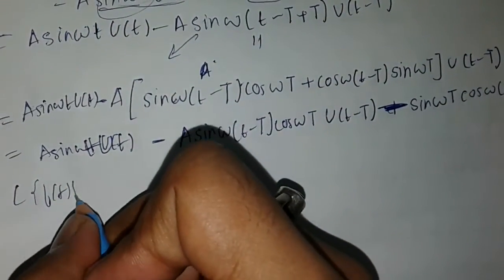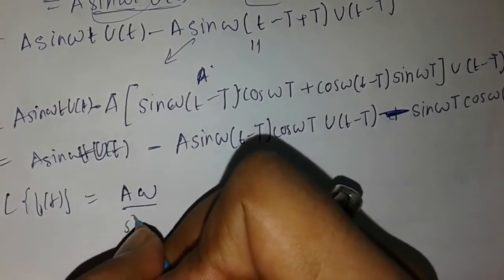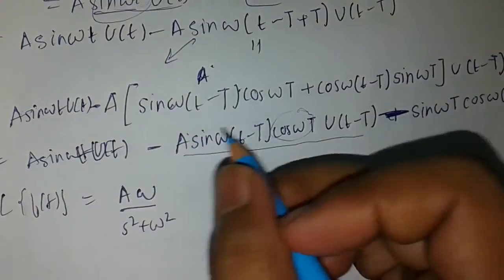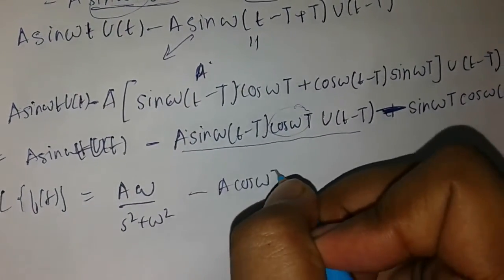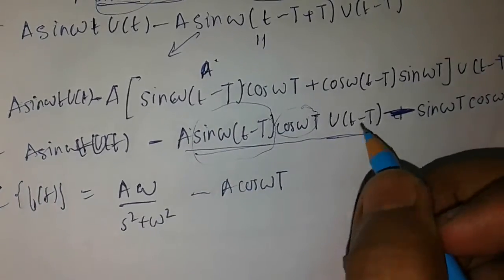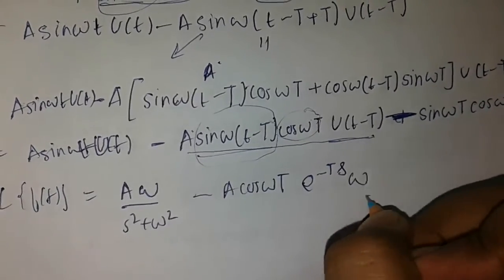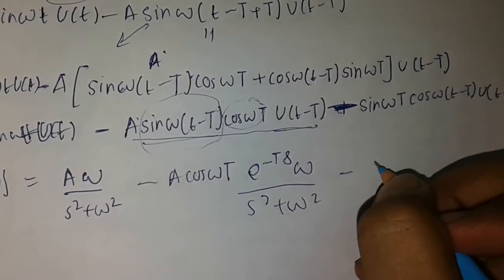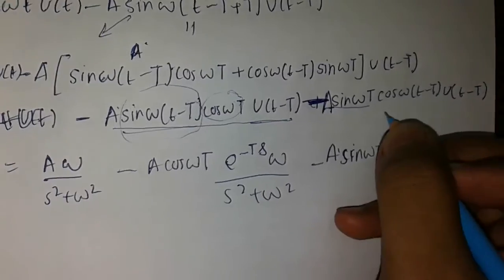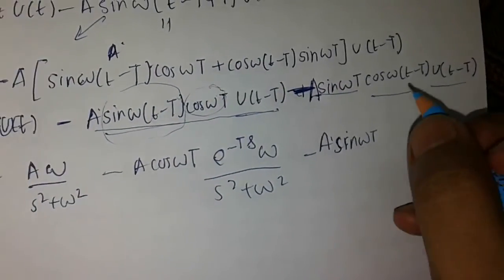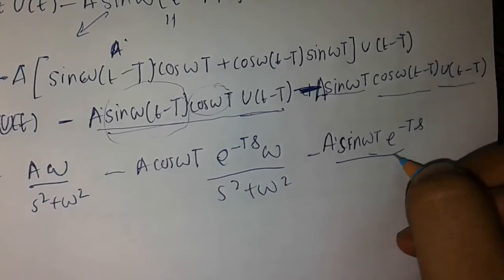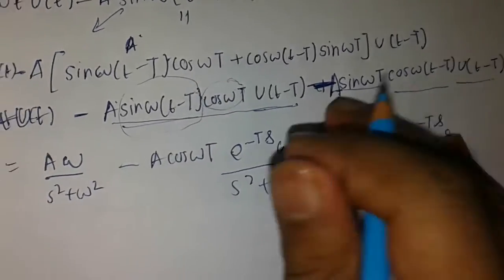Taking the Laplace of this function: for a·sin(ωt)·u(t) we get a·ω/(s² + ω²). For the shifted terms, using the second shifting theorem, each picks up a factor of e^(−Ts). So we get: minus a·cos(ωT)·e^(−Ts)·ω/(s² + ω²) minus a·sin(ωT)·e^(−Ts)·s/(s² + ω²).